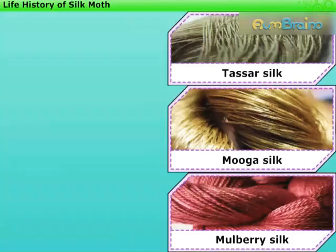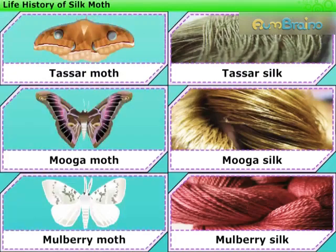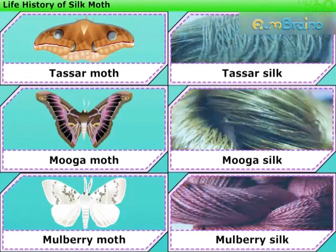We usually find different silk materials in the market which vary in textures. Do you know why? In nature, there are a variety of silk moths which yield silk of different textures. Hence we find different types of silk materials in the market.